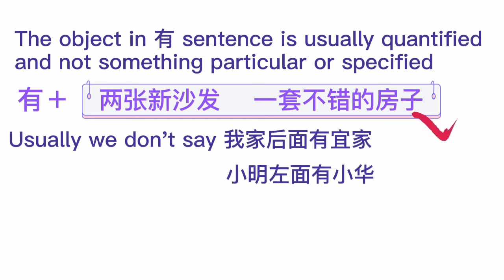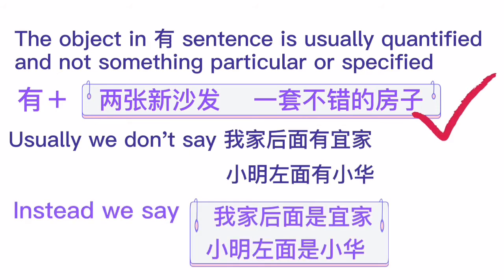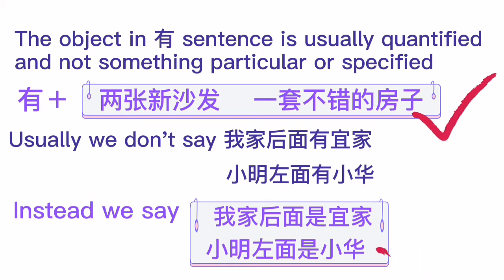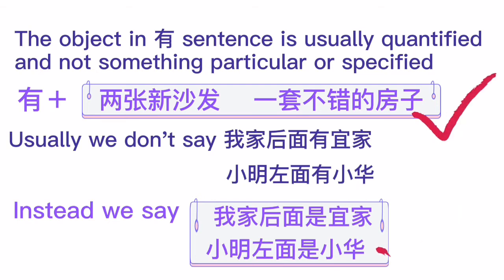Similarly, 小名左面有小华 — 小名 is a name, 左面 is left side, and 小华 is another name — that is also something particular. Instead, we use 是: 我家后面是宜家, 'Behind my house is Ikea.' And 小名左面是小华, 'At the left side of 小名 is 小华.' So for particular or specified objects, use 是 instead of 有.